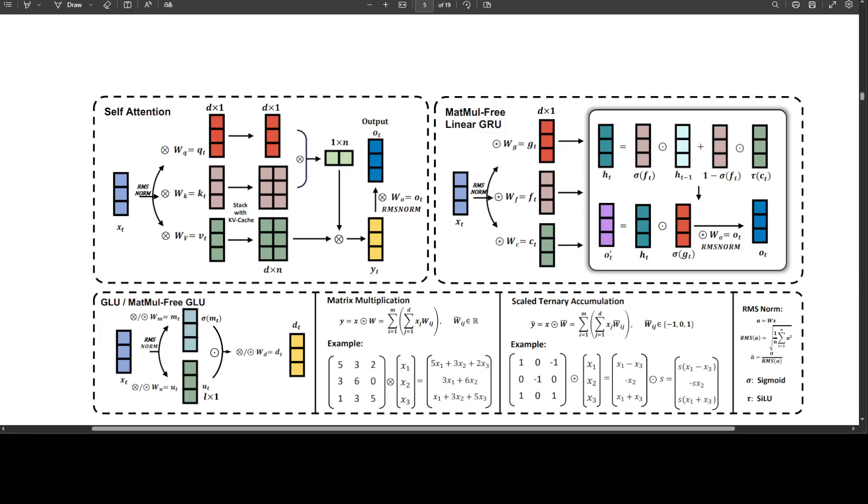In this diagram, you can see the overview of MatMul-free LM where the sequence of operations are shown for vanilla self-attention on the top left and the MatMul-free token mixer on the top right and ternary accumulations. The MatMul-free LM employs a MatMul-free token mixer and a MatMul-free channel mixer to maintain the transformer-like architecture while reducing compute cost.